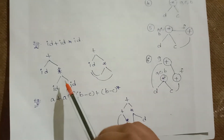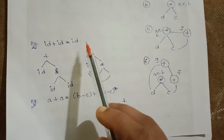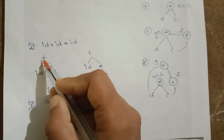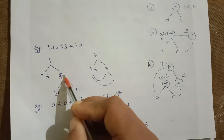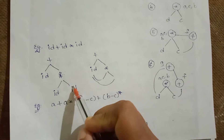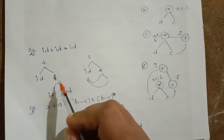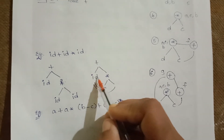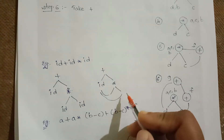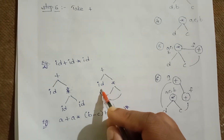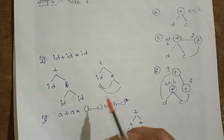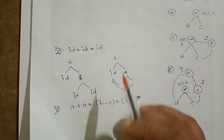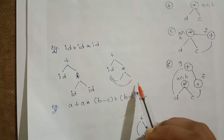For example, consider ID + ID * ID. In the syntax tree, plus has children ID and star, and star has children ID and ID. In the DAG representation, the common ID nodes are shared — since the ID values are already declared, transitions point to the existing nodes rather than duplicating them. Whatever common sub-expressions exist, there is no need to represent them again in the directed acyclic graph.